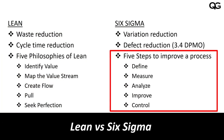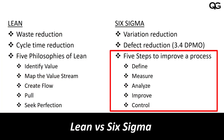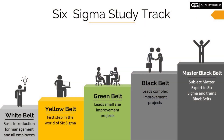This DMAIC approach is for improving an existing process. There is also another approach in six sigma for creating a new process, called DMADV. Six sigma in itself is a big subject with separate courses — from white belt to yellow belt, green belt, and black belt. We won't focus on that here.